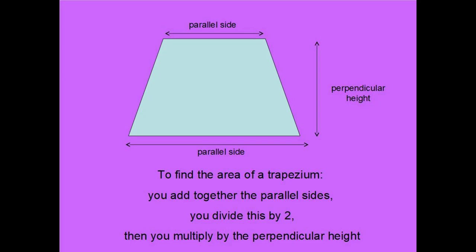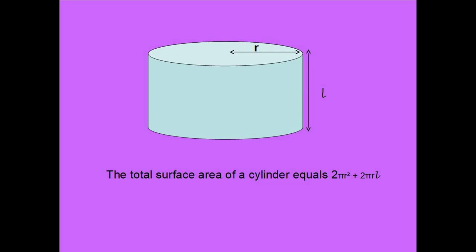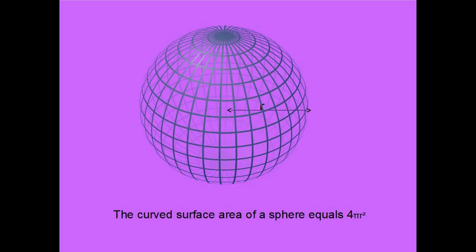The total surface area of a cylinder equals two pi r squared plus two pi r l. The curved surface area of a sphere equals four pi r squared.